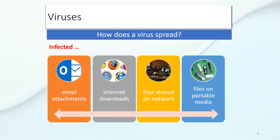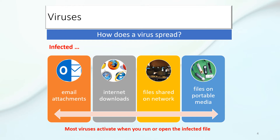How does a virus spread? How do you get a virus onto your computer? It's either an infected email attachment, something you download from the internet, files shared on a network, or files on portable media. Most viruses activate when you run or open the infected file.